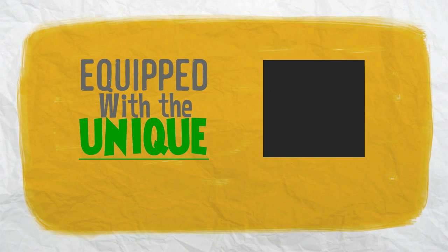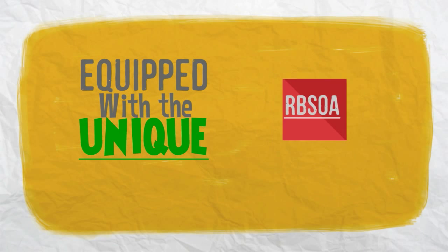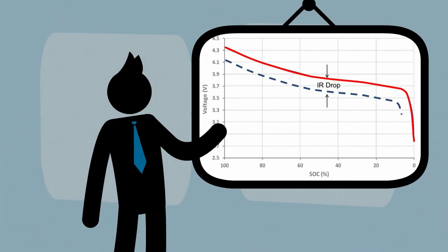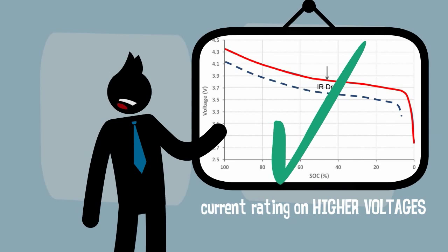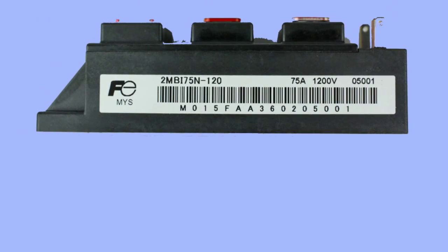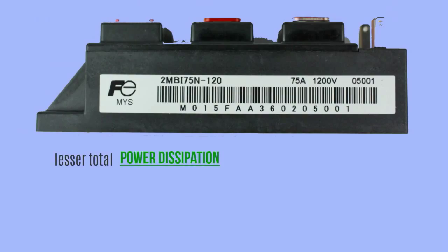Equipped with a unique square RBSOA and low saturation, the problem on deterioration of current rating on higher voltage has been resolved. Thanks to 2MB175N120's lesser total power dissipation